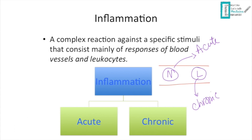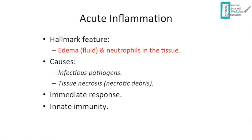Going back to the definition: inflammation is a complex reaction to specific stimuli, consisting mainly of blood vessel and leukocyte responses. It can be classified into acute inflammation and chronic inflammation, as shown in that simplified picture.